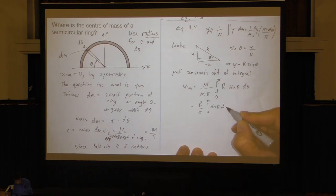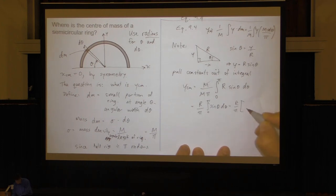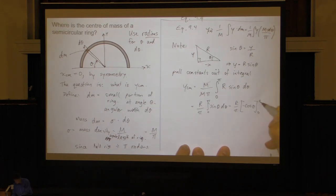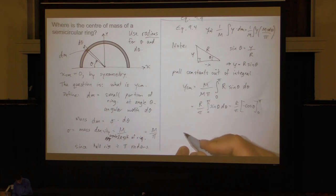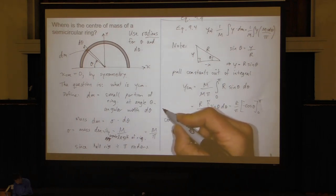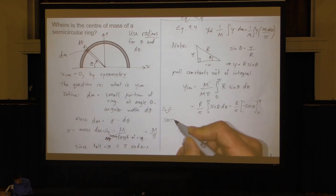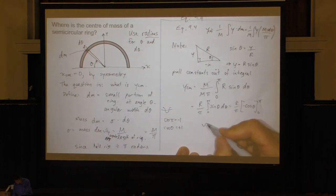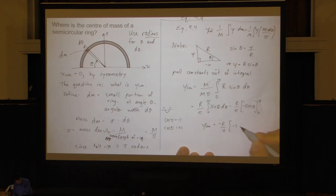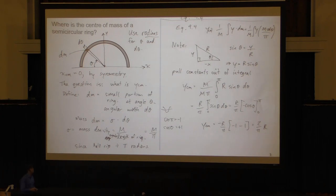The integral of sine theta is negative cosine, so evaluating from 0 to pi: r over pi times [−cos(theta)] from 0 to pi. Cosine of pi is −1 and cosine of 0 is +1, so we get r over pi times (−(−1) − (−1)) — that simplifies to 2r over pi. So y_cm equals 2R/π, which is roughly two-thirds of the way out to the radius.